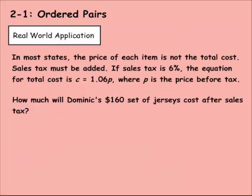Let's do a real-world application then. So in most states, the price of each item is not the total cost. Sales tax must be added. If sales tax is 6%, the equation for the total cost is C for cost equals 1.06 times the price, where P is the price before tax. So therefore, how much will Dominic's $160 set of jerseys cost after sales tax?